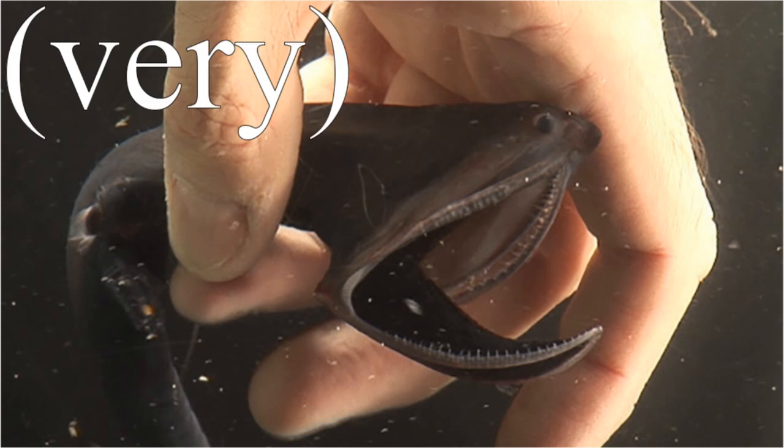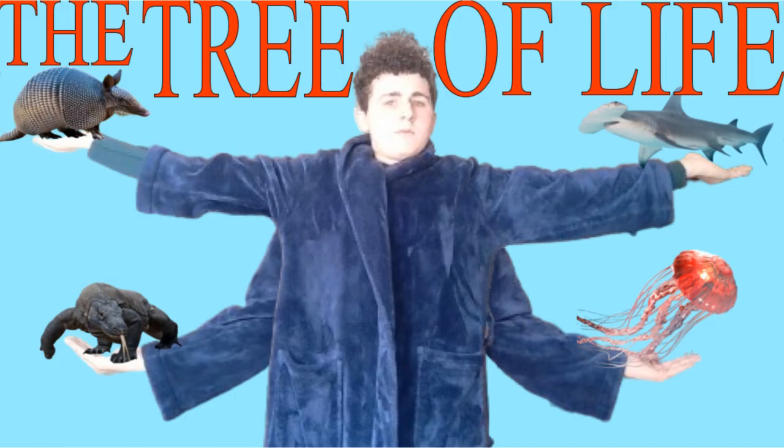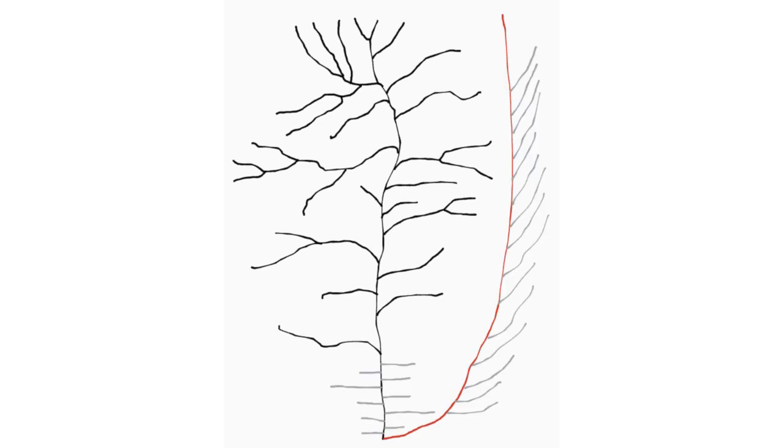But instead of talking about how interesting this particular eel is, per se, I'm going to explain the general tree of life. The tree of life is a name for the diagram that includes every organism and how they're connected, including regular trees, how meta. But you can't get more meta than Metazoa, another name for animalia.